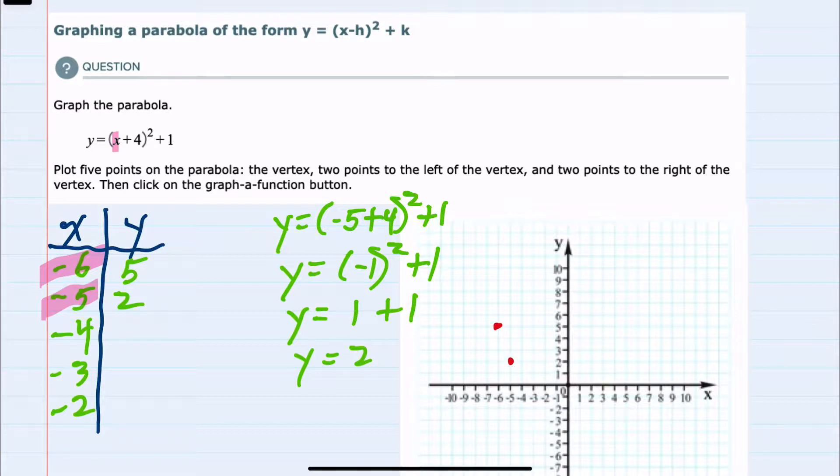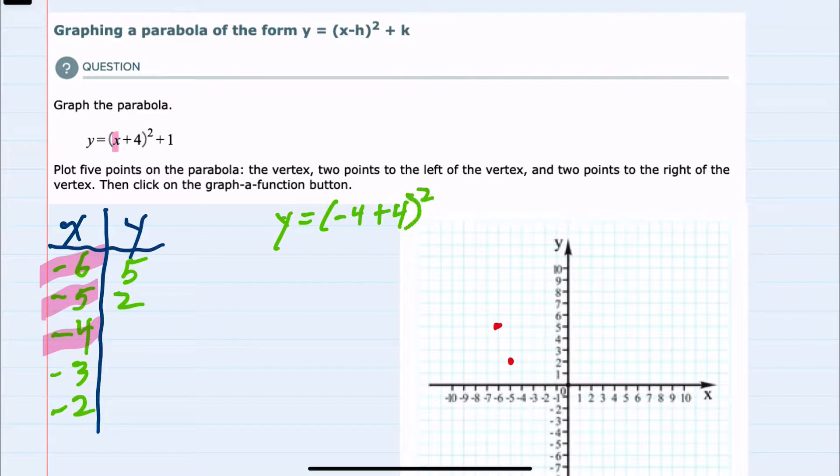Graphing that, we would then move on to the next x value, -4. Substituting into the equation, we now have y = (-4 + 4)² + 1. Inside the parentheses is now going to be 0 squared plus 1, so y equals 0 + 1 or 1. We now have the coordinate here at the vertex of (-4, 1). So -4, 1 on the graph, we can move on to -3.